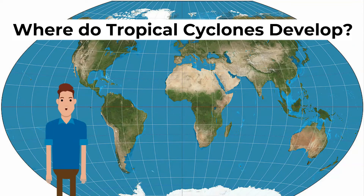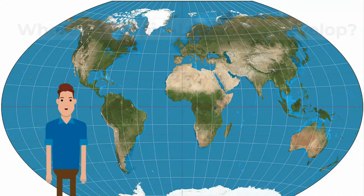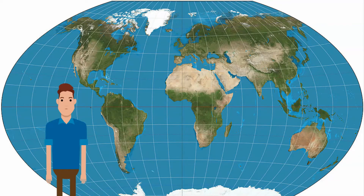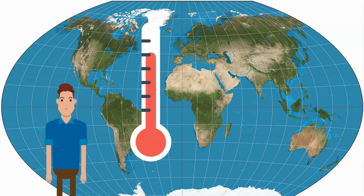Where do tropical cyclones develop? Tropical cyclones need very specific conditions to form, so they will only form in certain areas — between 5 to 15 degrees north or south of the equator in warm oceans. This location is known as the source area. Condition one: temperature. Ocean temperatures must be around 26 to 27 degrees Celsius and at least 50 meters deep. Warm water provides the storm with energy, which is why storms form during late summer when the ocean has had time to heat up.